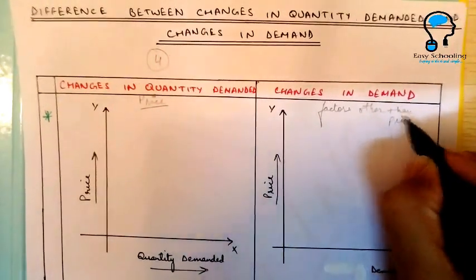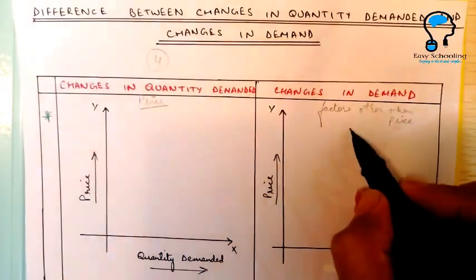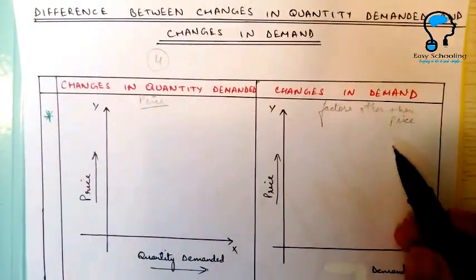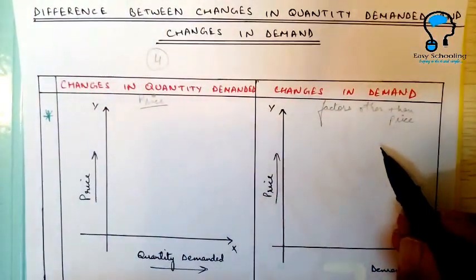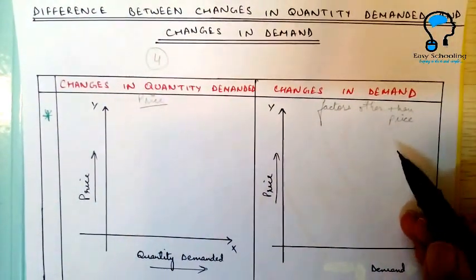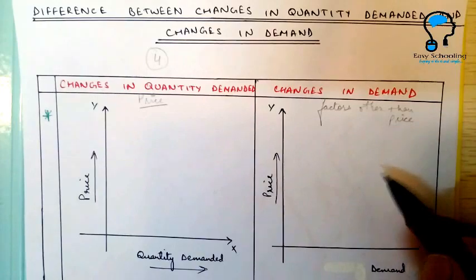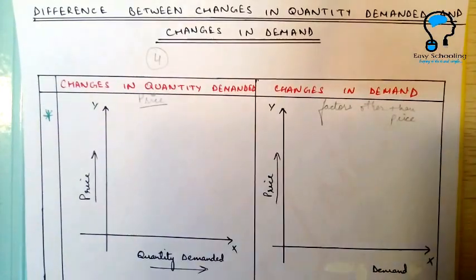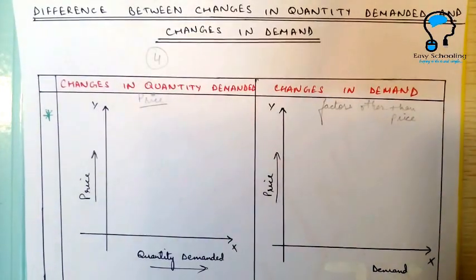Changes in demand are due to change in income, or due to change in price of related goods, or due to change in fashion, taste and preferences of the consumer.